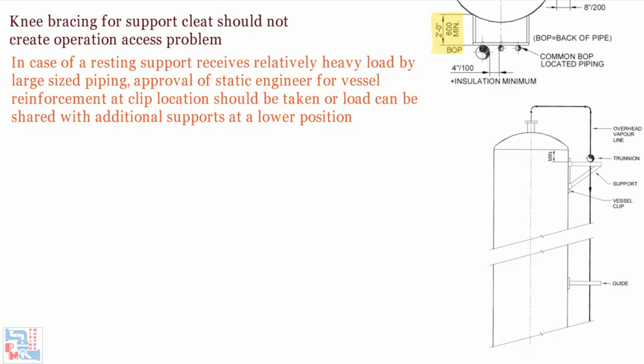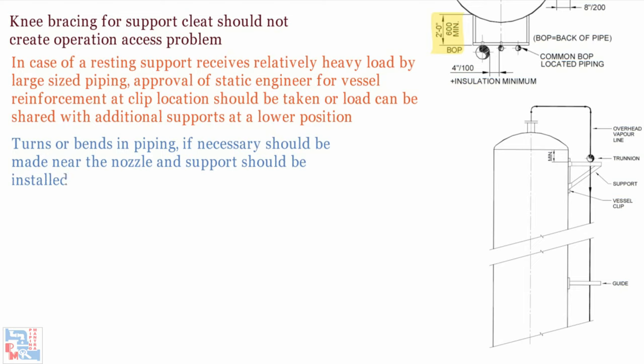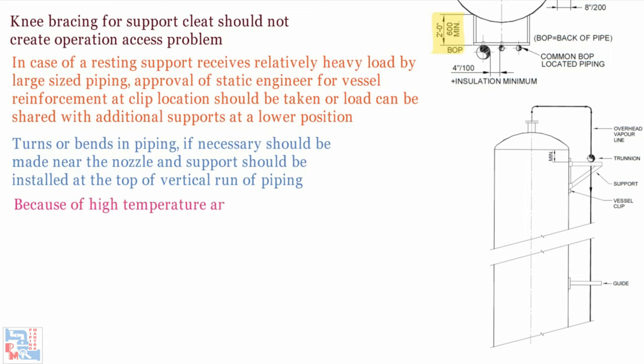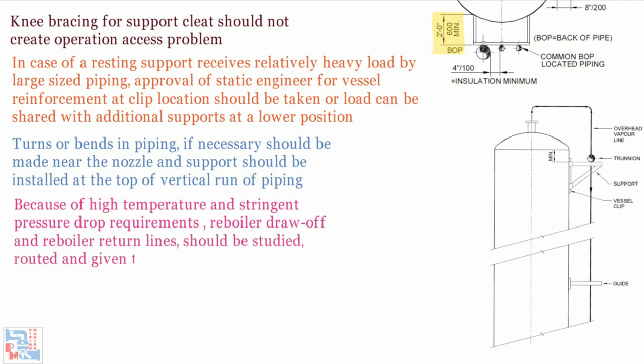Same type of clips should be used if possible to ensure ease of construction. Turns or bends in piping if necessary should be made near the nozzle and support should be installed at the top of vertical run of piping as per stress group recommendation. Because of high temperature and stringent pressure drop requirements, reboiler draw off and reboiler return lines should be studied, routed and given to stress on priority for finalizing type of supports and support location.